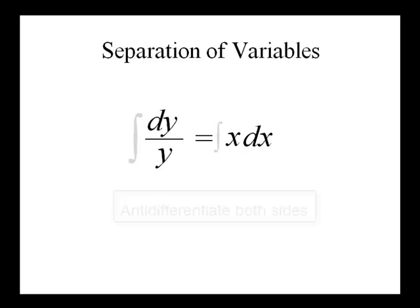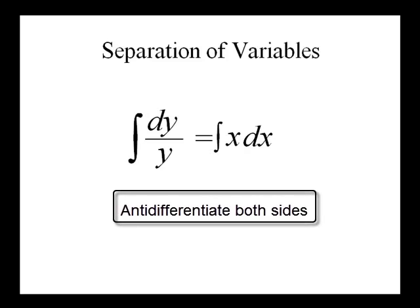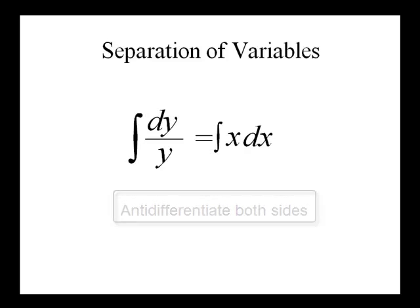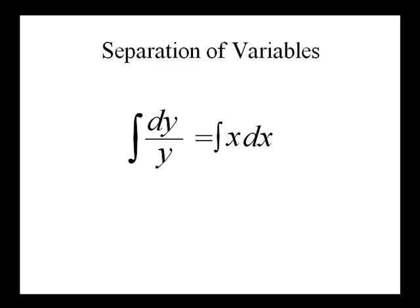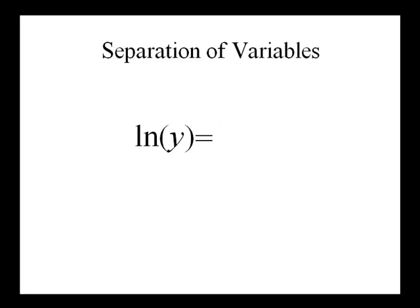Now what we'll do is take the antiderivative of each side. The antiderivative of dy over y is ln of y. The antiderivative of x dx is one-half x squared.